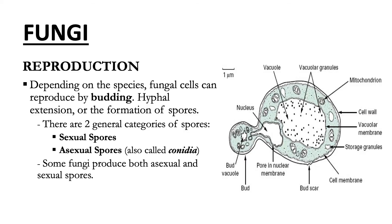Depending on the particular species, fungal cells can reproduce by budding, hyphae extension, or the formation of spores. There are two general categories of fungal spores: asexual spores and sexual spores. Sexual spores are produced by the fusion of two gametes or the fusion of two nuclei. Asexual spores are not produced by fusion of gametes and are known as conidia. Fungal spores and conidia are very resistant structures carried great distances by wind, and are resistant to heat, cold, acids, bases, and other chemicals.